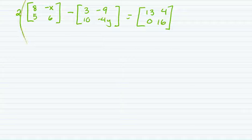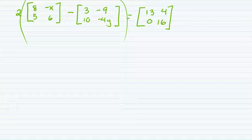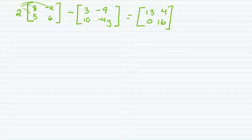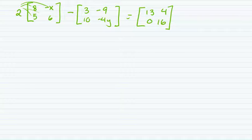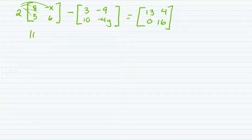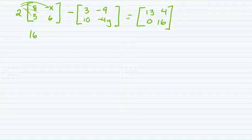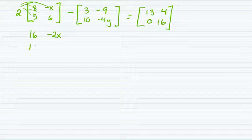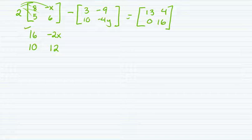There's no large parentheses. We talked about this in class. So I'm just going to distribute this 2 through multiplication into every single element in my first 2x2 matrix. So I'm going to take 2 times 8, which is 16, 2 times negative x, negative 2x, 2 times 5, which is 10, and 2 times 6, which is 12.